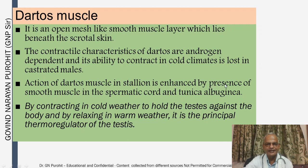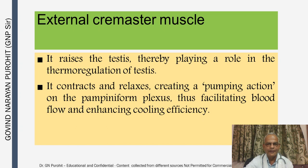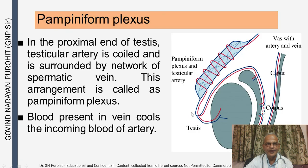The dartos muscle in the stallion is enhanced by smooth muscle in the spermatic cord and tunica albuginea. By contracting in cold weather to hold the testes against the body and relaxing in warm weather, the dartos muscle is the principal thermoregulator of the testes. The external cremaster muscle raises the testes, contributing to thermoregulation; it contracts and relaxes creating a pumping action on the pampiniform plexus, facilitating blood flow and enhancing cooling efficiency. At the proximal end of the testes, testicular arteries are coiled and surrounded by a network of spermatic veins — this arrangement is called the pampiniform plexus. Blood in the veins cools the incoming arterial blood, lowering its temperature.